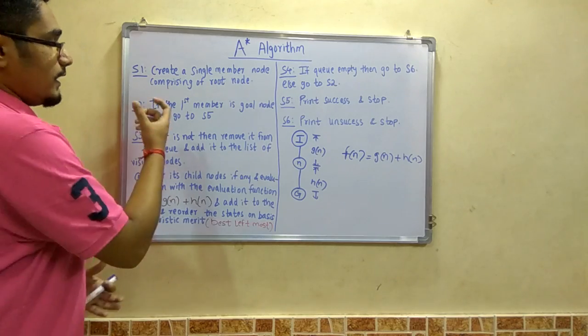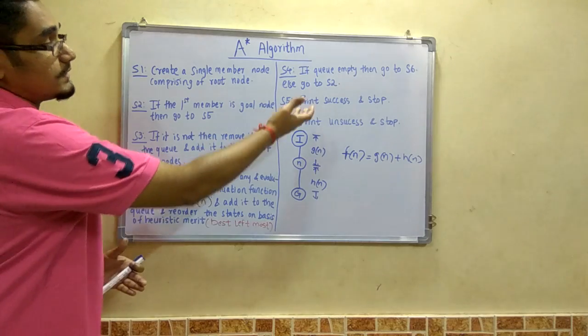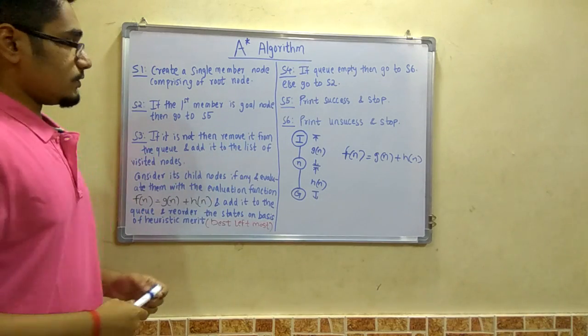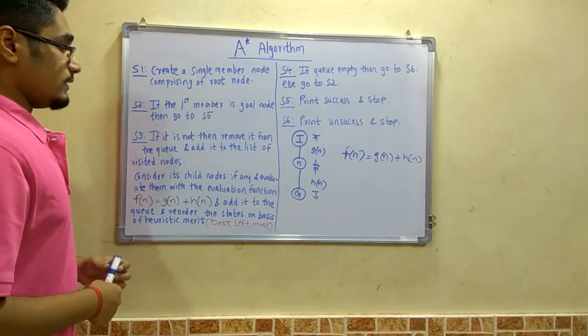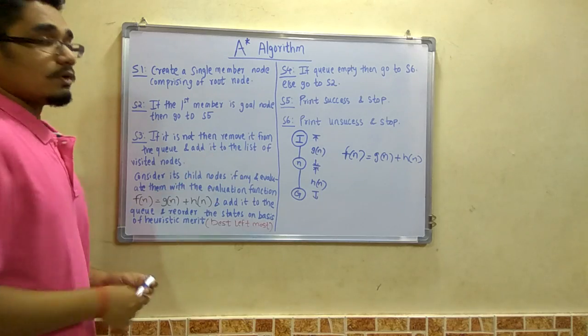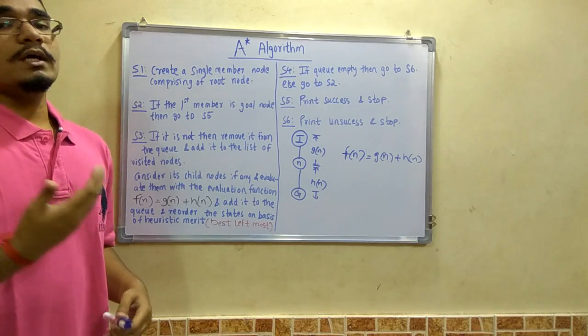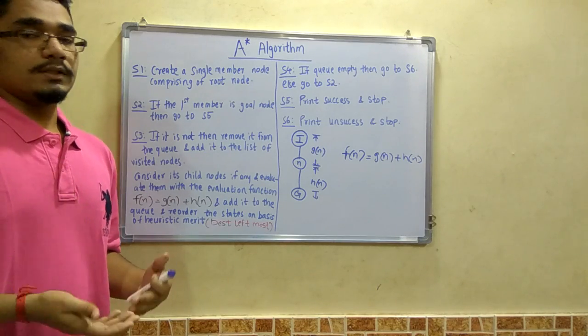Next, if the first member is found to be the goal node, then go to step 5 which says print success and stop. If that is not the case, remove it from the queue and add it to the list of visited nodes. These steps remain the same for other algorithms as well, like best first search.